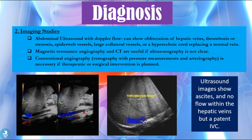We can also do imaging studies. An abdominal ultrasound with Doppler flow can show obliteration of the hepatic veins, thrombosis or stenosis, a spiderweb pattern in the vessels, large collateral vessels, or a hyperechoic cord replacing a normal vein. The large amount of ascitic fluid is visible, and dark blue on Doppler within a vessel indicates non-moving venous blood, telling us a thrombus is situated there. Magnetic resonance angiography and CT are useful if the ultrasound is not clear, and conventional angiography — venography with pressure measurements and arteriography — is necessary if therapeutic or surgical intervention is planned.